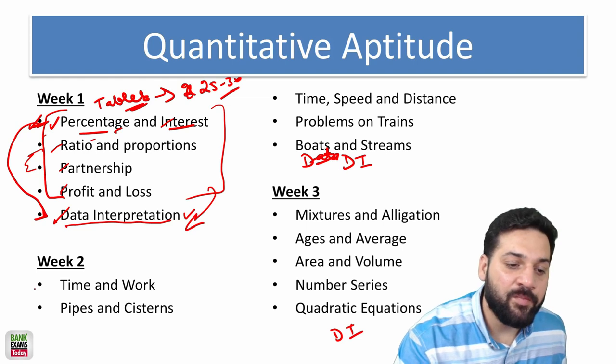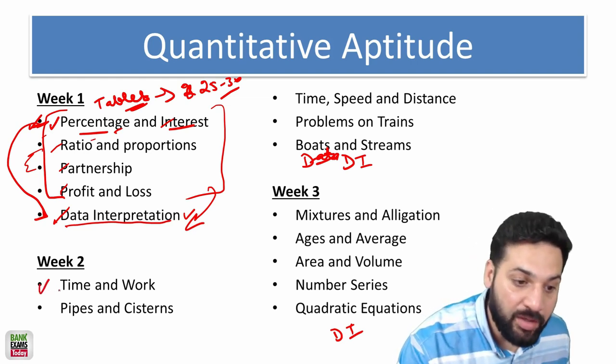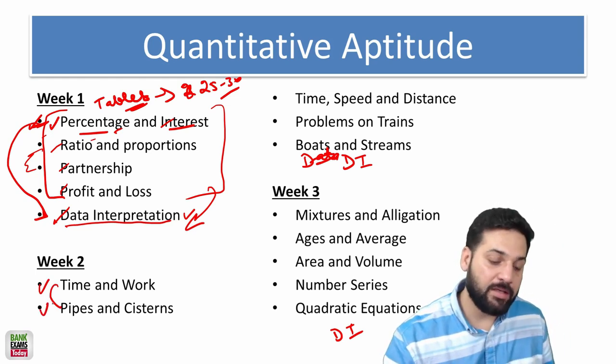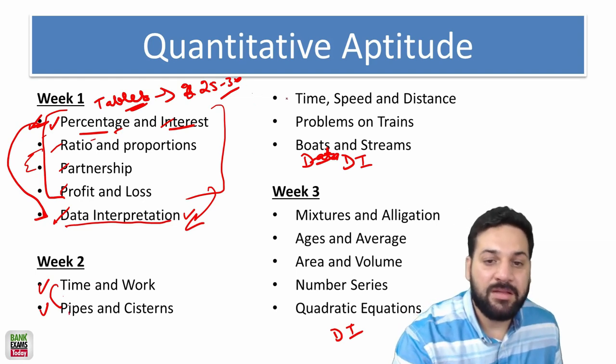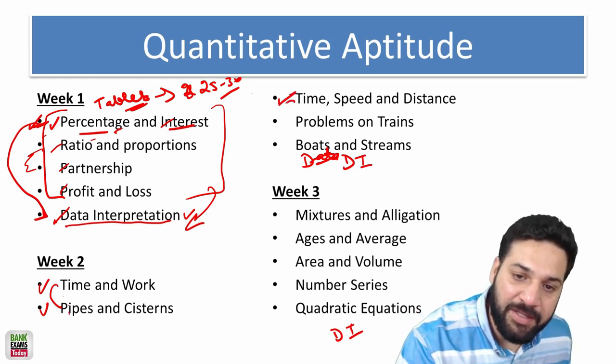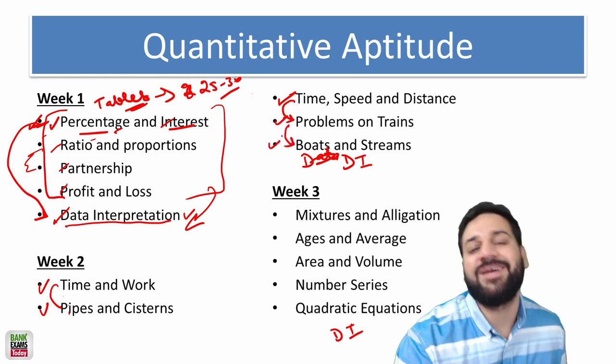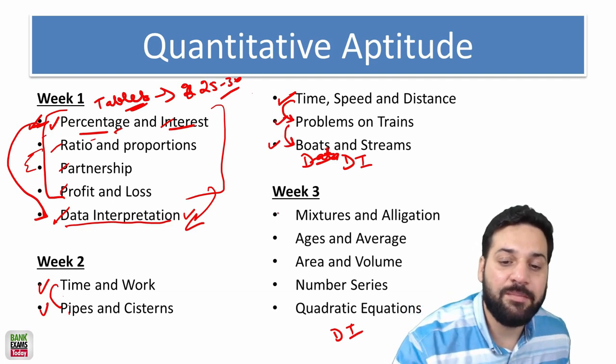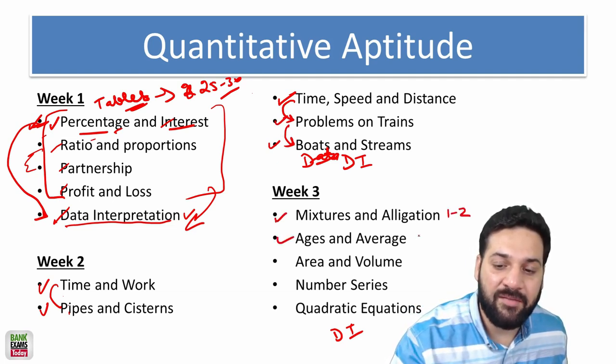In week two, start with time and work, really easy. After time and work you need to do pipes and cisterns because the concept is quite similar. Then time, speed and distance. After time, speed and distance, move on to problems based on trains and then boats and streams because the concept is quite similar.